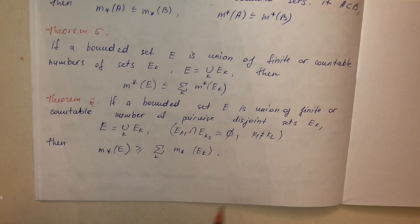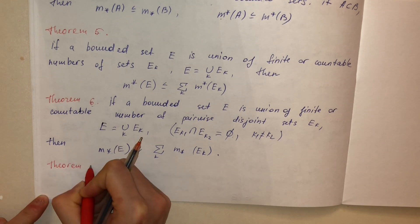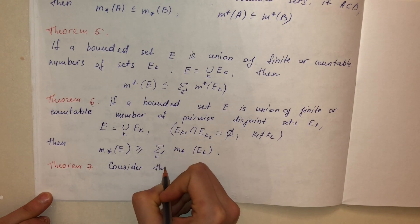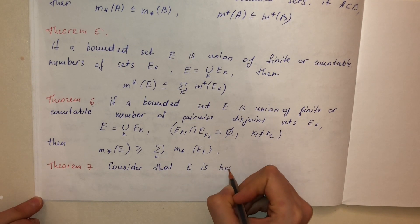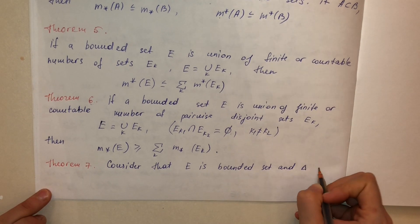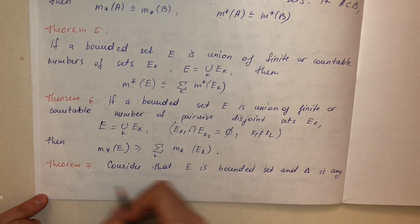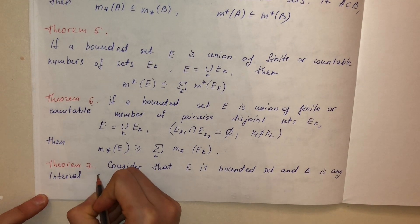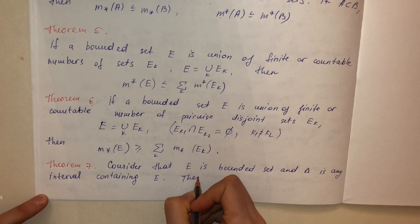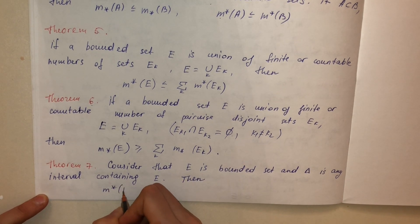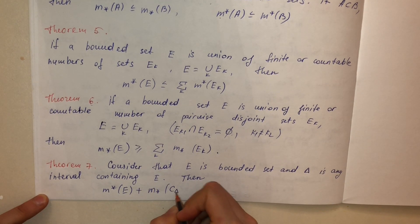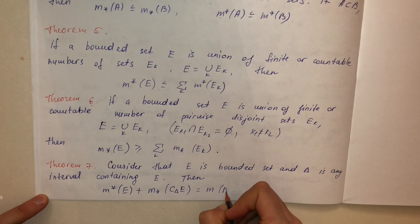Our final theorem about inner and outer measures: Consider that E is a bounded set and delta is any interval containing E. Then the outer measure of E plus the inner measure of the complement of E with respect to delta equals the measure of delta.